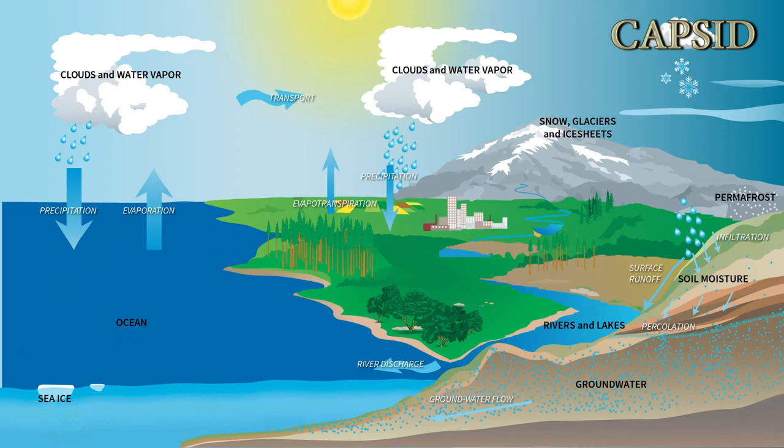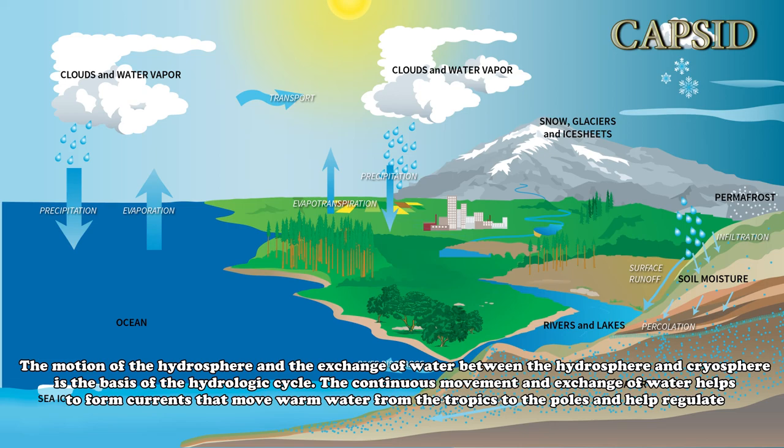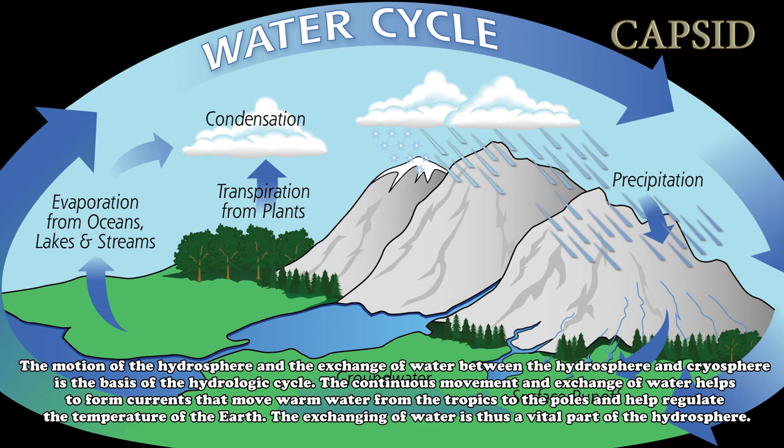The motion of the hydrosphere and the exchange of water between the hydrosphere and cryosphere is the basis of the hydrologic cycle. The continuous movement and exchange of water helps to form currents that move warm water from the tropics to the poles and help regulate the temperature of the Earth. The exchanging of water is thus a vital part of the hydrosphere.